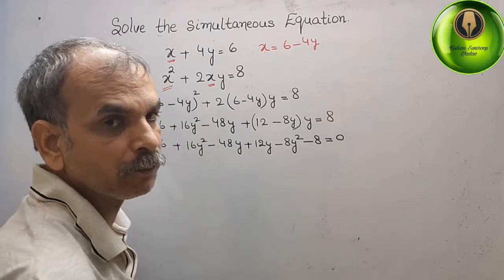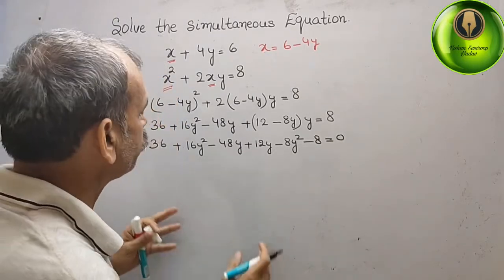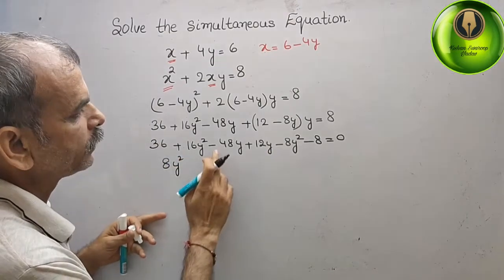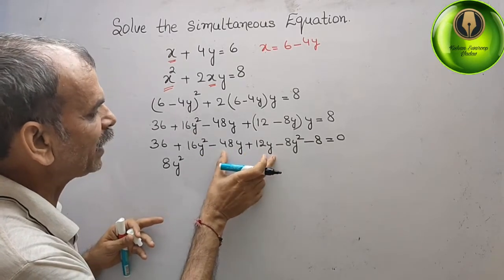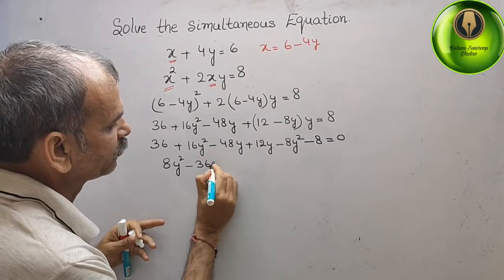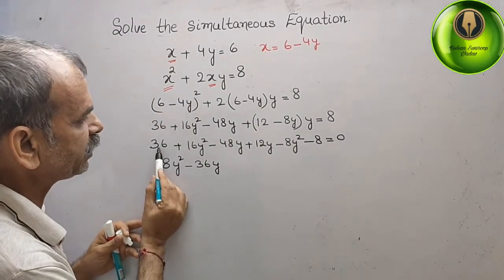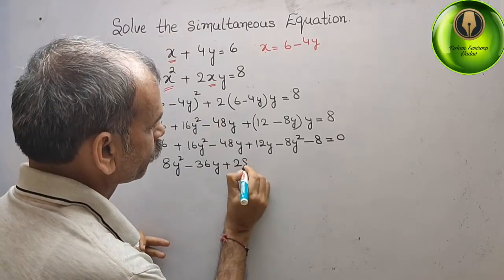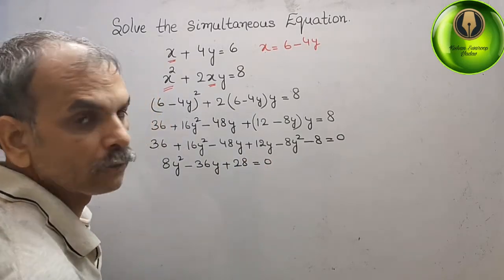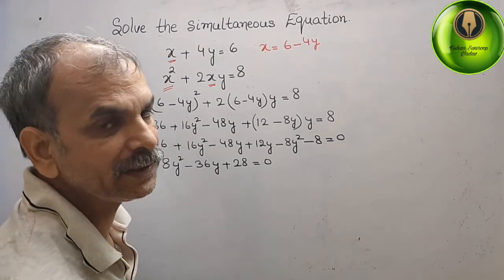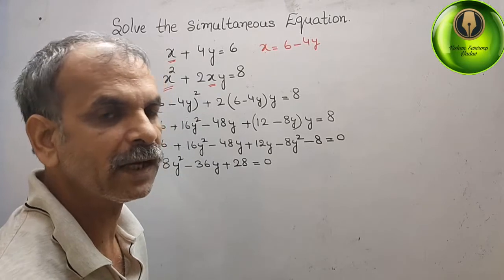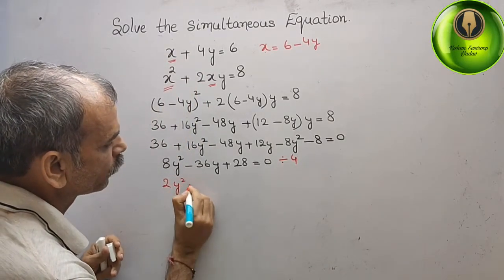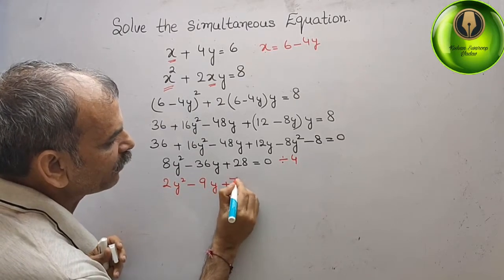Arranging and simplifying: 16y² - 8y² = 8y²; -48y + 12y = -36y; bringing 8 to the left gives 28. So 8y² - 36y + 28 = 0. Dividing all terms by 4 gives 2y² - 9y + 7 = 0.